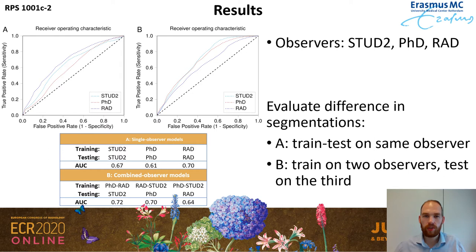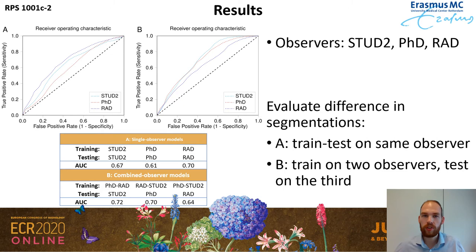Let's take a look at the results. We have three observers who performed the segmentations: a medicine student, a PhD student, and a radiologist. In the A models, you can see the performance of single-observer models where both training and test segmentations come from one observer. The AUC values show there is some relation between CT imaging features and the growth pattern. In the B models, we used segmentations from two observers for training and from a third unseen observer for testing. The model benefits from using more segmentations from different observers and actually performs better on segmentations from the third unseen observer.